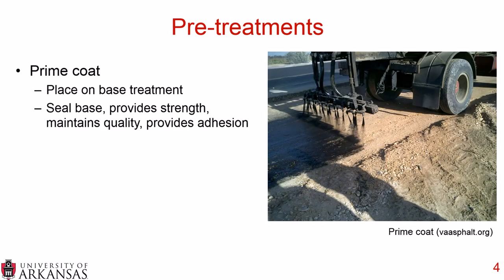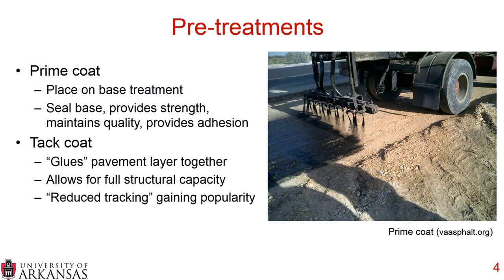There are also a couple of pre-treatments that use asphalt emulsions. For example, prime coats are where you place asphalt emulsion on a base treatment, and this prime coat seals the base. It provides a little bit of strength at the very surface, allows you to maintain the quality of the base, and provides adhesion between whatever you place on top and the base course. A tack coat glues pavement layers together and allows for full structural capacity. This is where you take asphalt emulsion and place it in between pavement lifts.